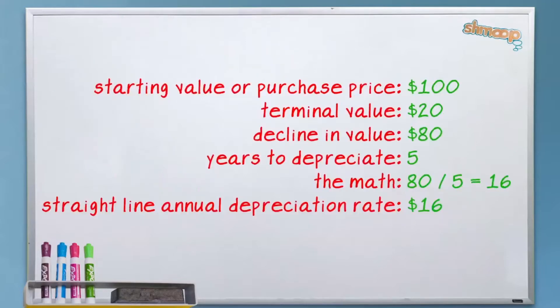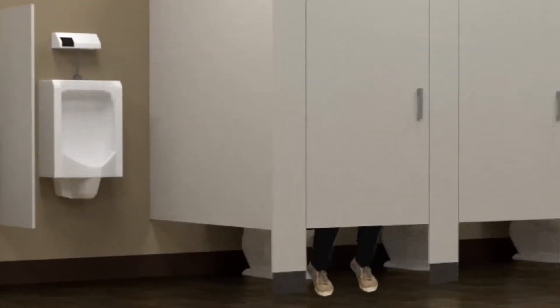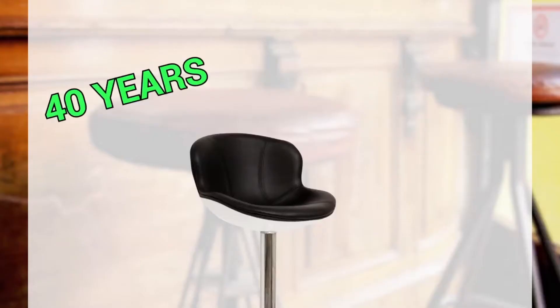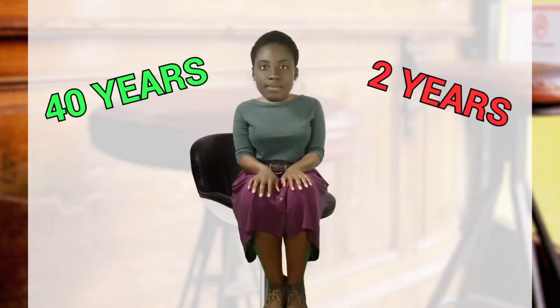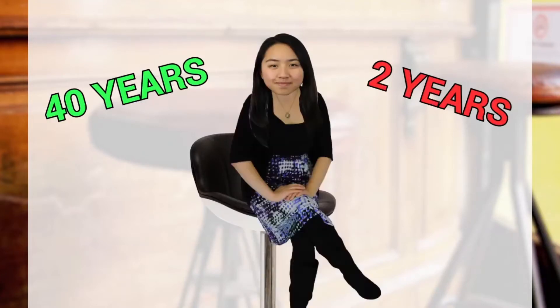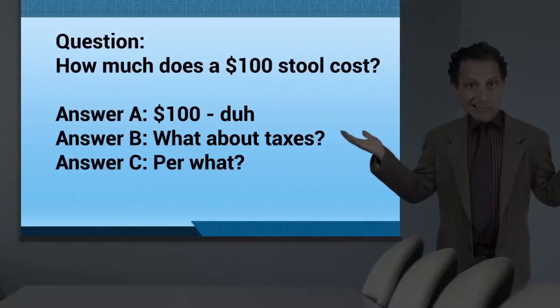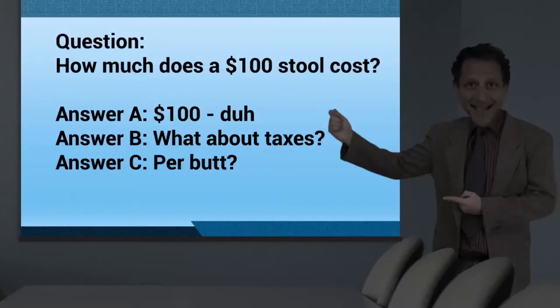There are lots of other ways to think about expensing this expense and its relative value to the firm. One way to look at assessing the cost of that stool, what if a stool could last 40 years or two years, but its duration was entirely dependent on the number of butts that sat on it? In that case, we turn to answer C. Per what? Per glass, per week, per customer, per butt. There we go.